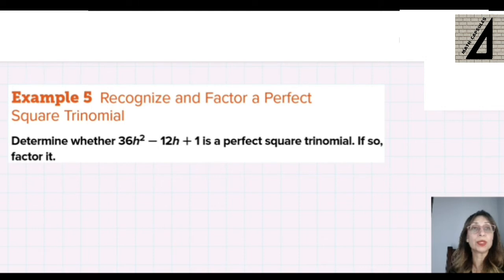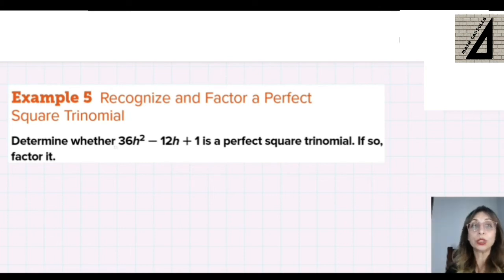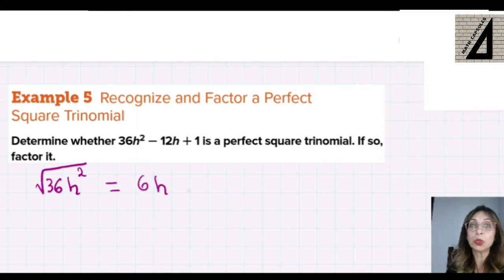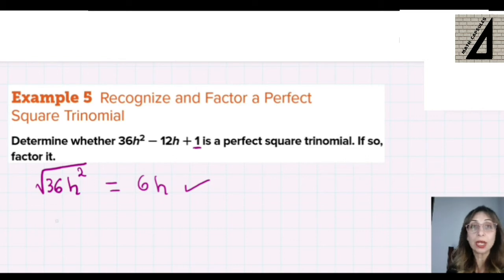Another example: determine whether this trinomial is a perfect square trinomial and if so, factor it. Again, we have three conditions to satisfy. The first condition: is 36h² a perfect square? Yes, its square root is 6h, so the first condition is satisfied. The second condition: is 1 a perfect square? Yes, the square root of 1 is 1, so the second condition is also satisfied.